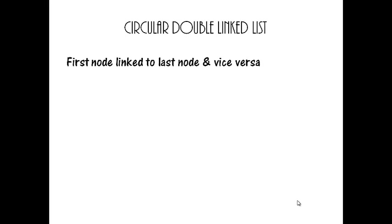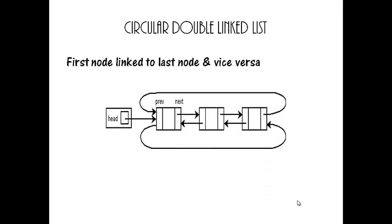The next one is circular double linked list. As the name indicates, circular double linked list is a linked list where the first node is linked to the last node and vice versa. That is, the first node contains the address of the last node and the last node contains the address of the first node. In circular linked list, traversal is possible in one direction, but here traversal is possible in both directions — from the first node to the last node and vice versa.